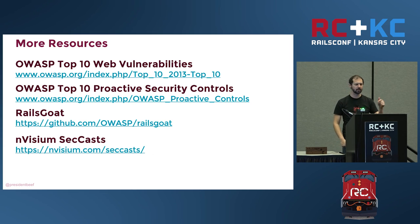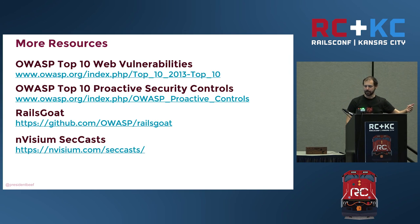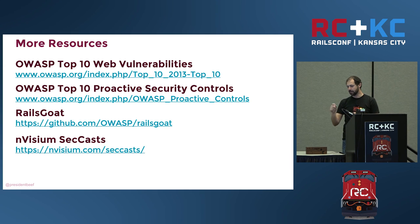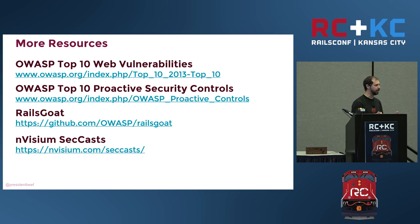If you're looking for hands-on, trying stuff out: Rails Goat is an OWASP project — a purposely vulnerable Rails application that also gives you hints of things to try, and if you want, it'll walk you through things. Also, Invisium has SecCasts, which you do have to sign up for but they're free — a pretty good resource for Rails security and security in general, both on defending against things and on trying to hack into stuff.